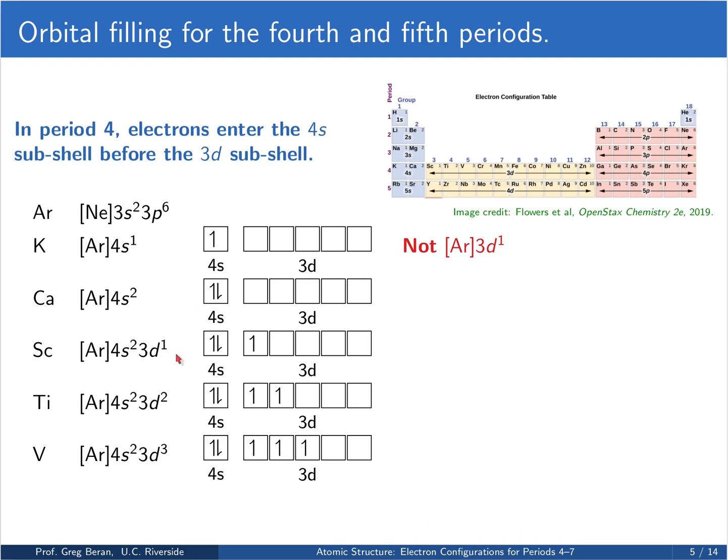When we get to scandium, we now have 3 valence electrons. So we put 2 in the 4s orbital and our next one goes into the 3d. And then for titanium and vanadium, we continue adding them into the 3d orbitals according to Hund's rules, spreading them out with parallel spins.